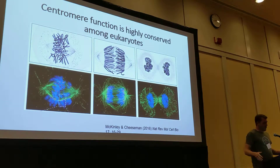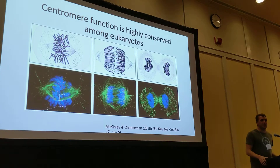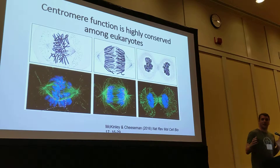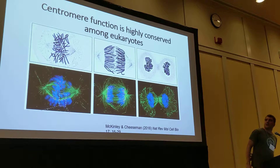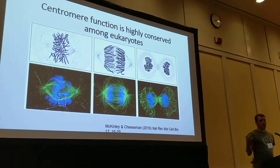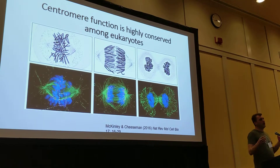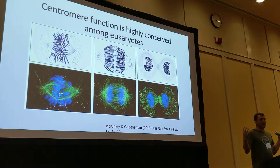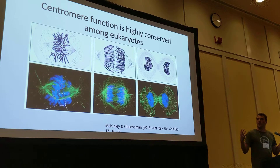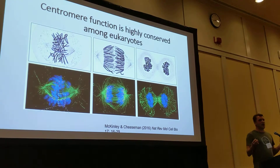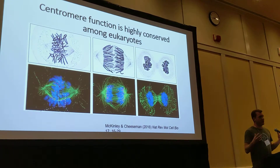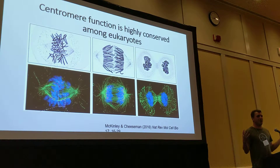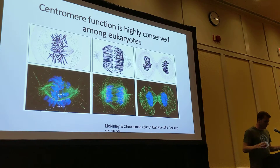Centromere function is highly conserved in eukaryotic organisms. Centromeres are very, very important because the centromere needs to be properly defined by the chromosome in order for chromosomes to segregate to the proper cell during mitosis and meiosis. If you don't have that, you get a lot of aneuploidy and non-disjunction, and it's really, really bad to not have the correct number of chromosomes.